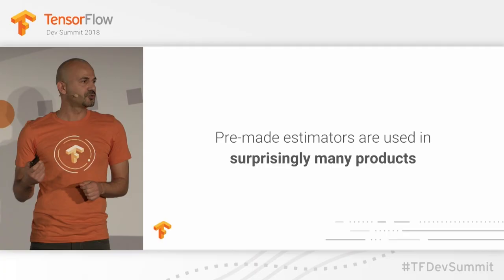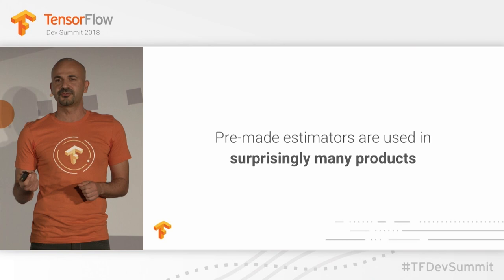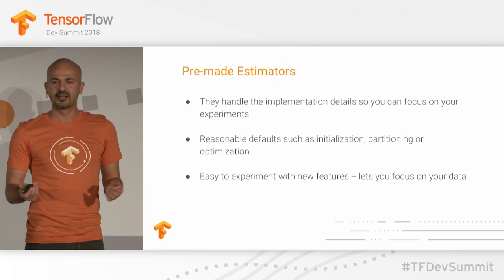The focus of your talk was really about estimators, pre-made estimators, Keras, and how to combine these things. I think the main line can be summarized as experimenting with your ideas with a couple of lines of code. So how can you experiment with your ideas while writing only a couple of lines of code?